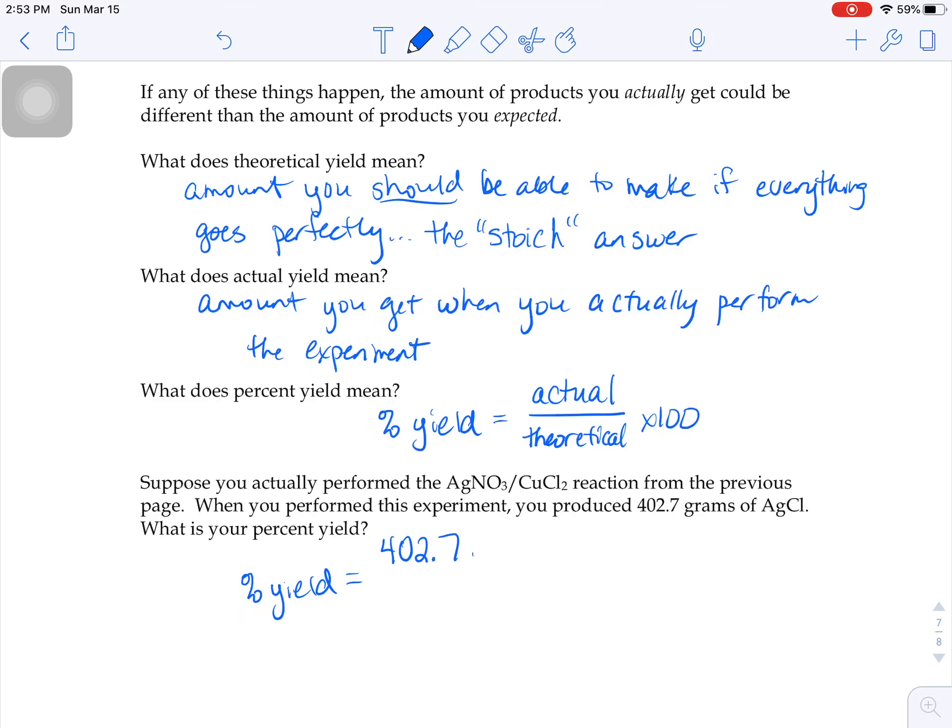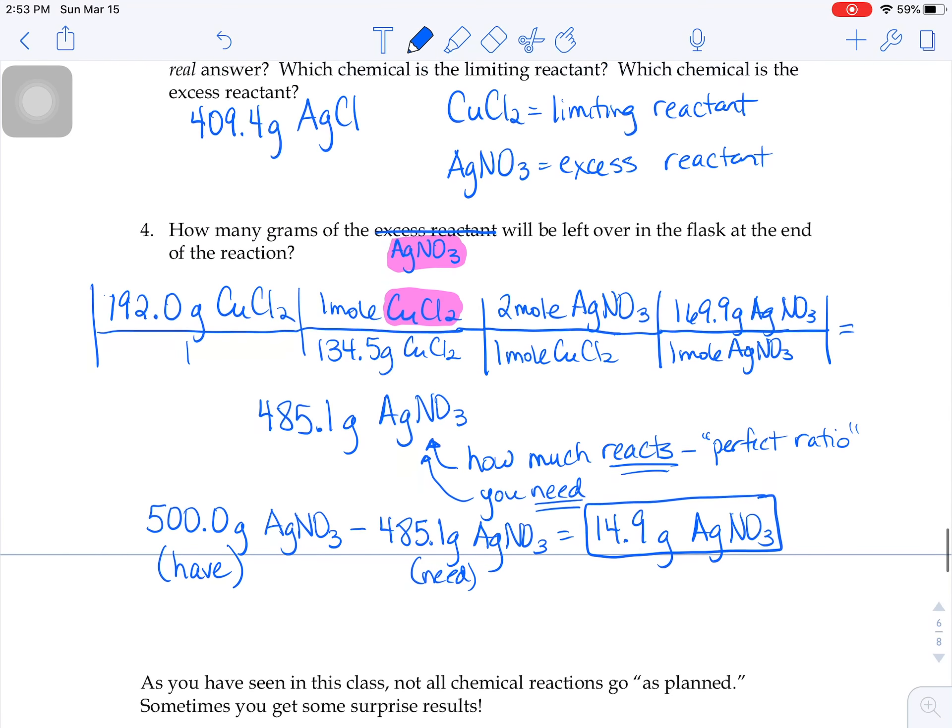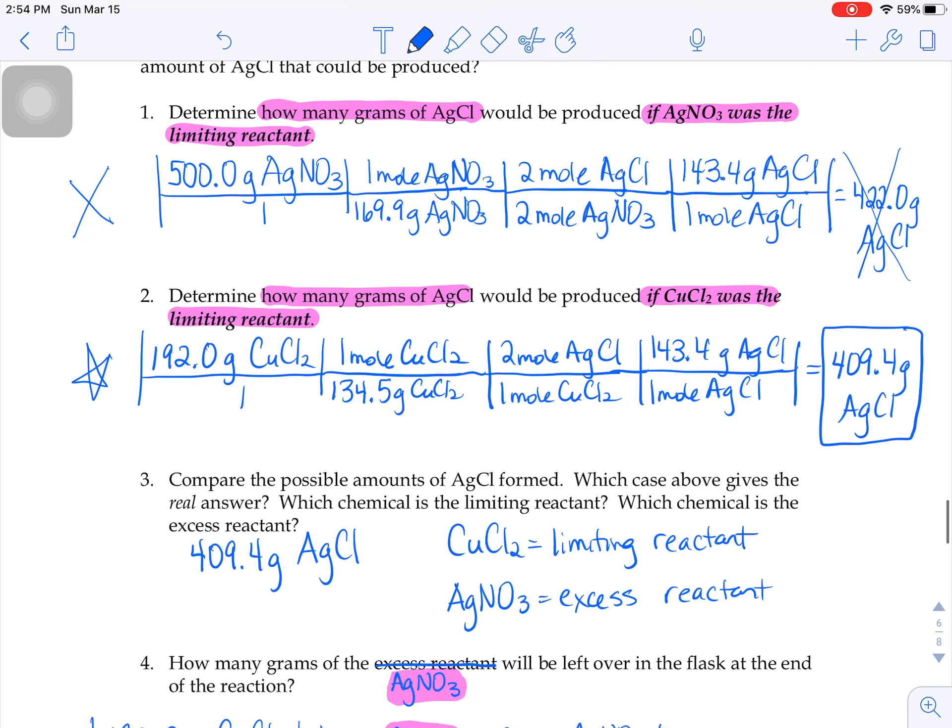So percent yield, you take what you actually really got when you do the experiment. So you got 402.7 grams of silver chloride is what you actually really got. And your stoichiometry answer is your theoretical. It goes on the bottom of that fraction. So we go back up here and say, what did we say we were going to make of silver chloride? We said we were going to make 409.4.